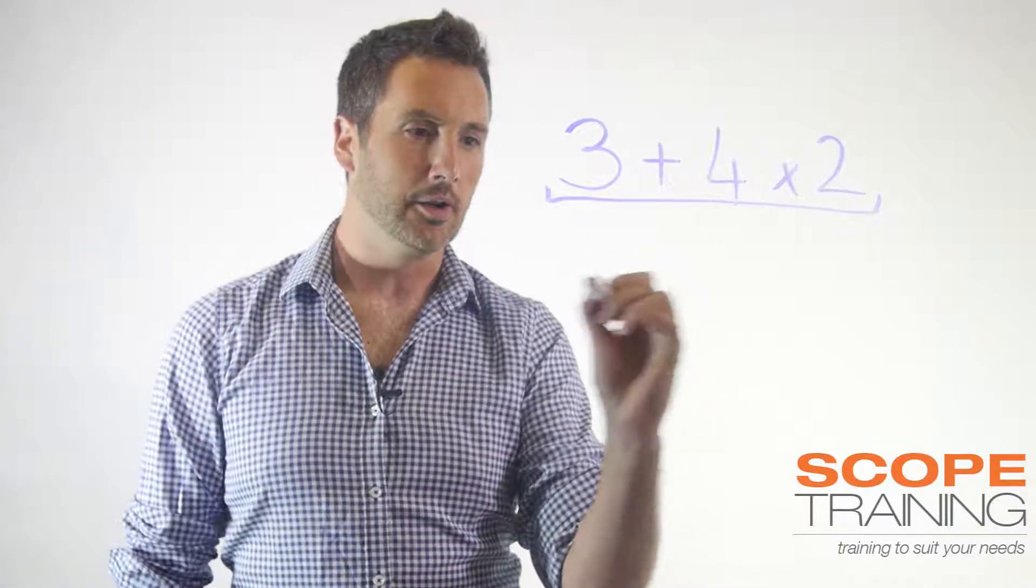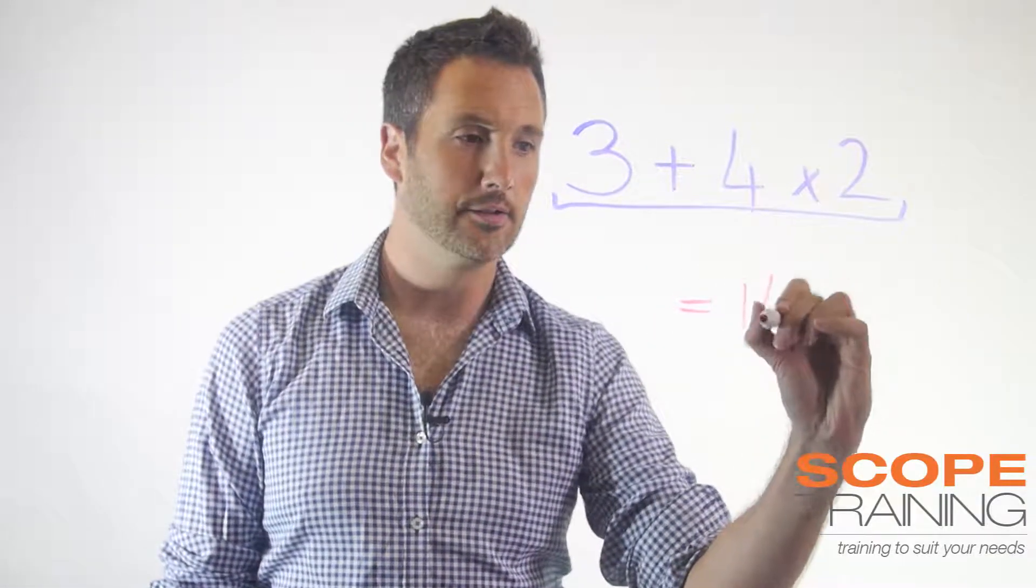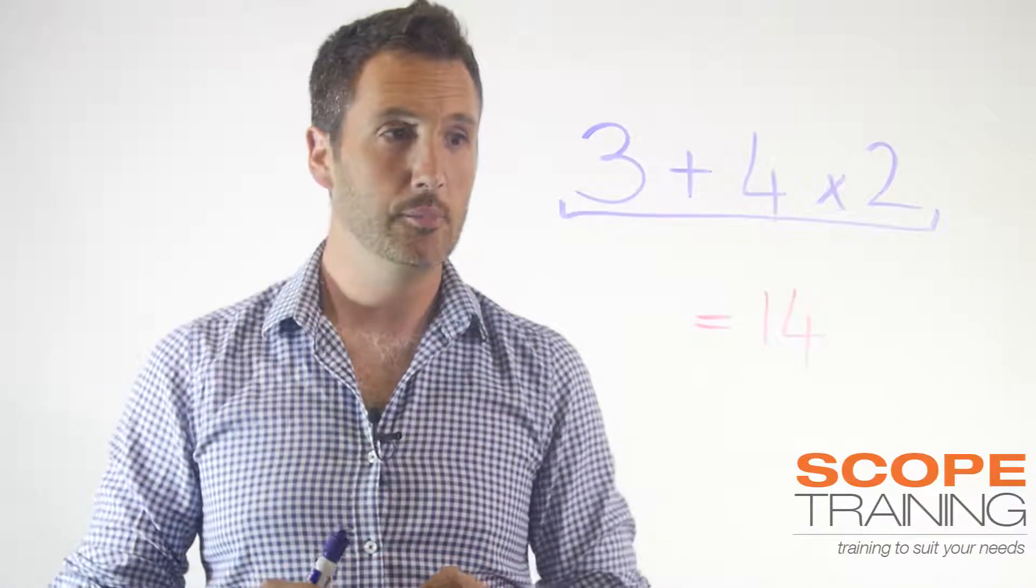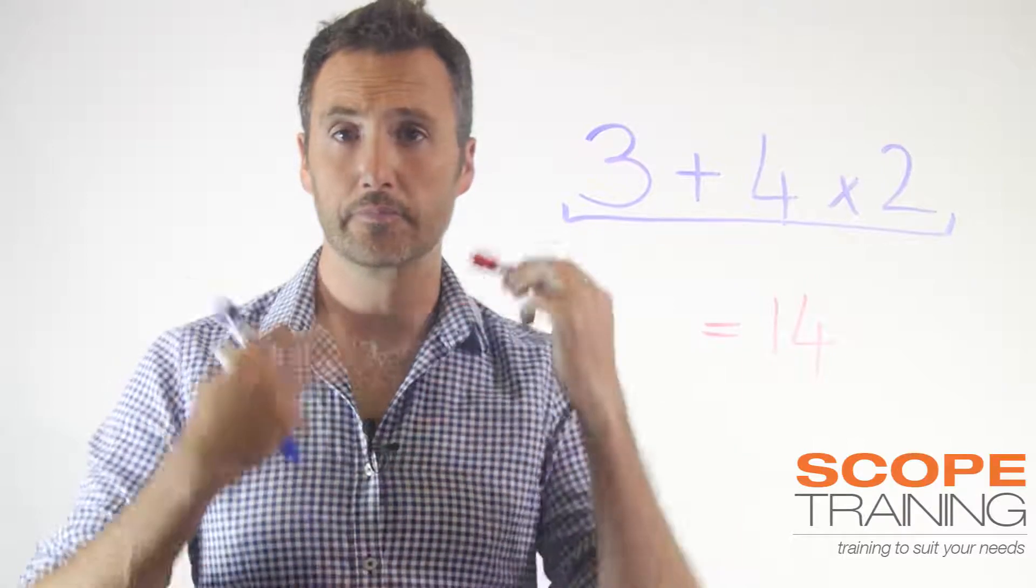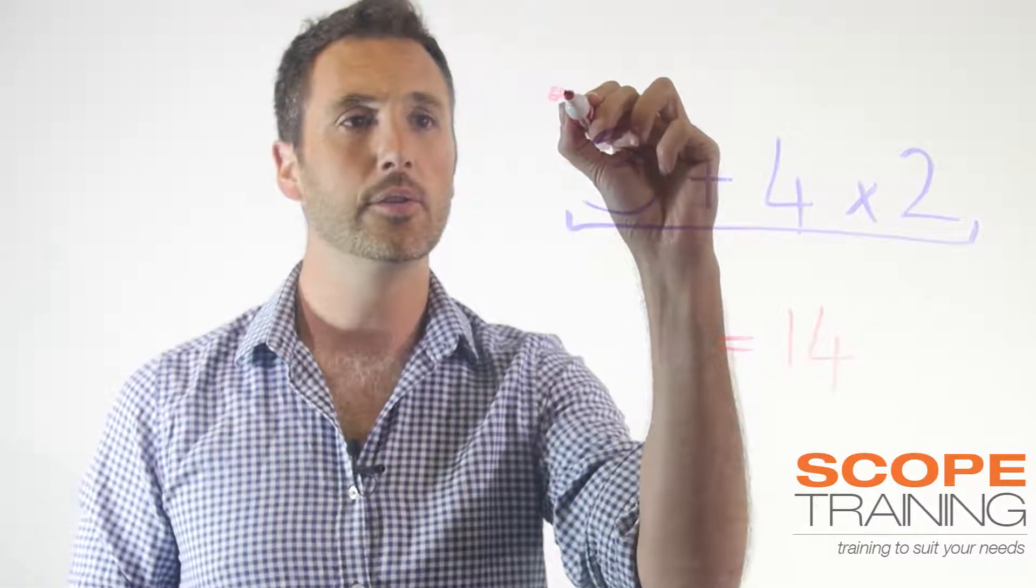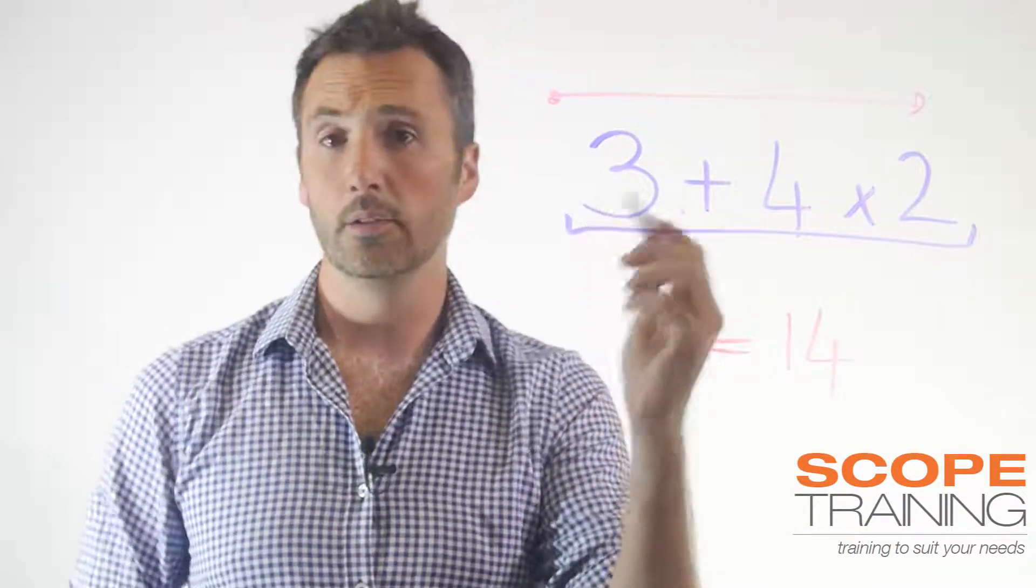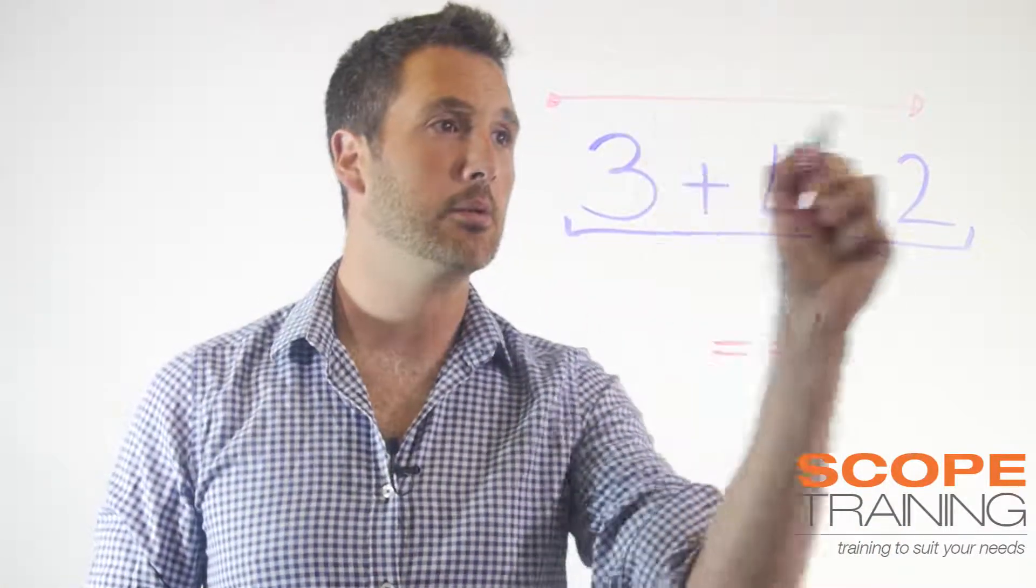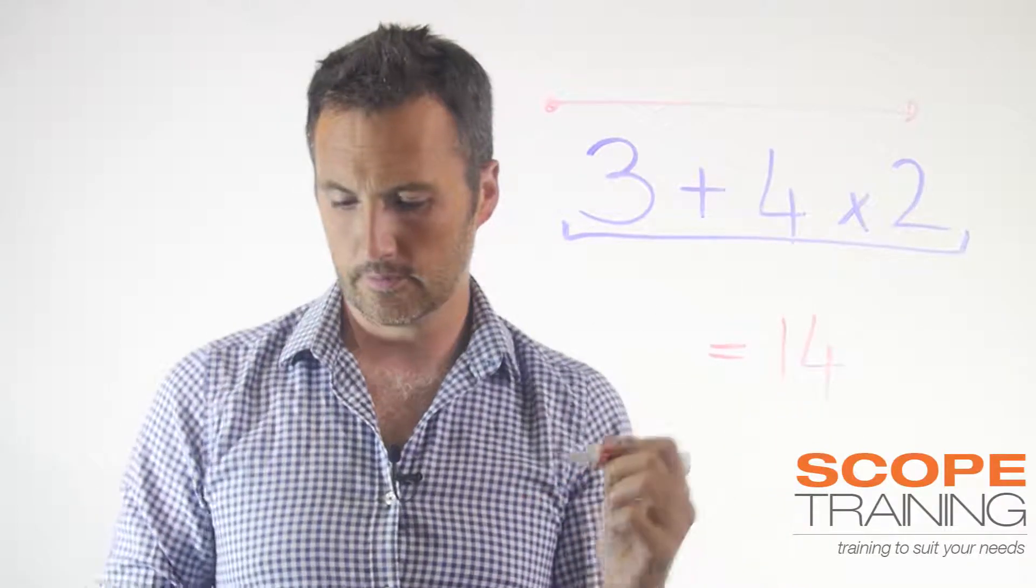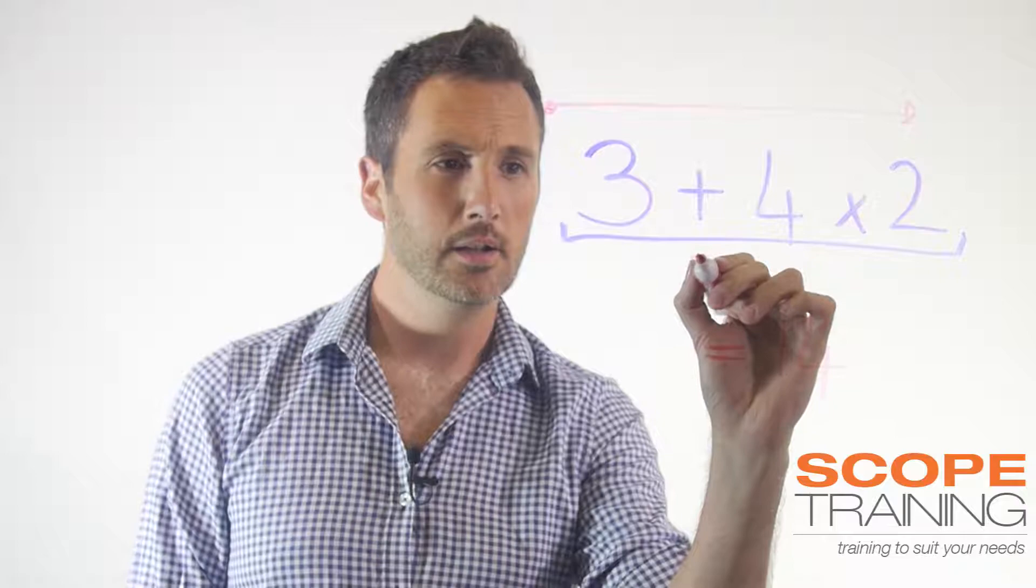When I ask a lot of people, they would give me answers such as 14, and a lot of you might have that answer because the logical brain, if you read or do many things, tends to work in this kind of order. We've got a job to do, let's start here and we'll finish there. So we go 3 + 4, well that gives us about 7.